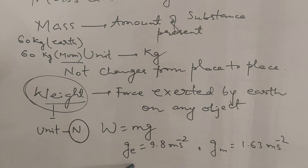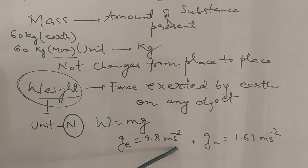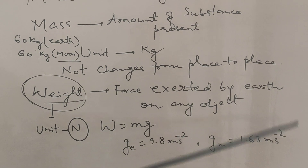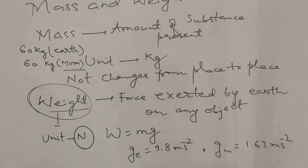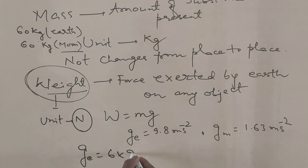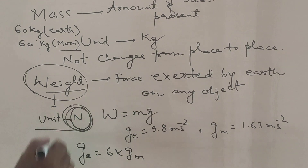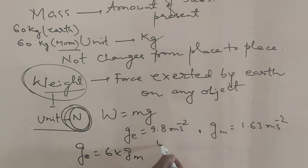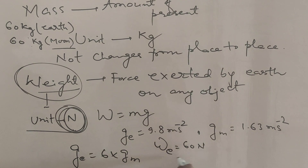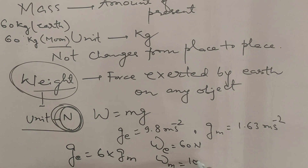The value of g on Earth is 9.8 m/s², whereas on the Moon it is 1.63 m/s². So g(Earth) is approximately 6 times g(Moon). The unit of weight is Newton. Therefore, if a body weighs 60 N on Earth, it will weigh only 10 N on the Moon.